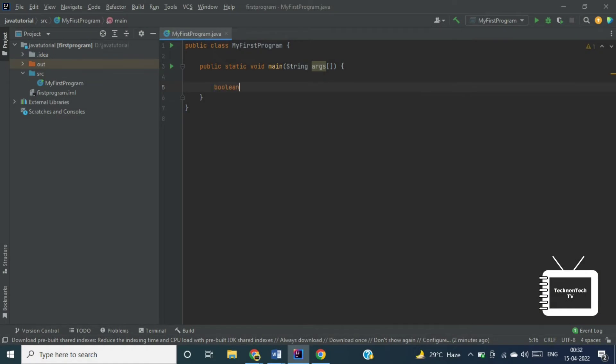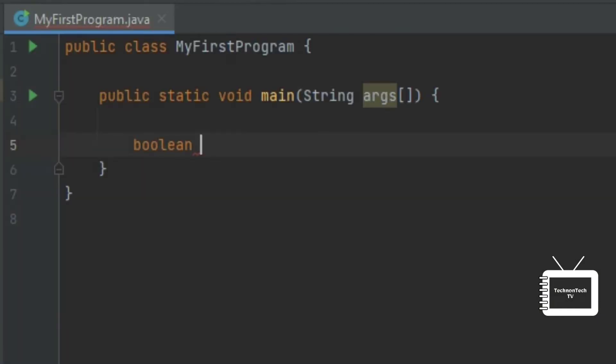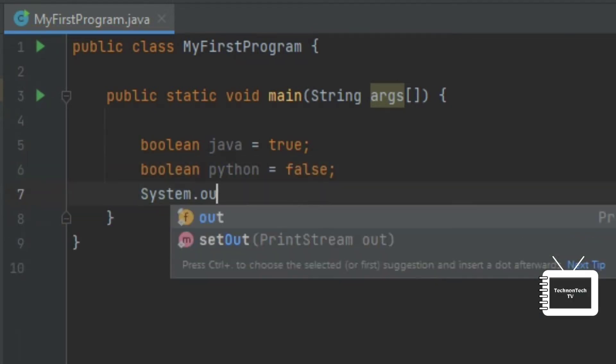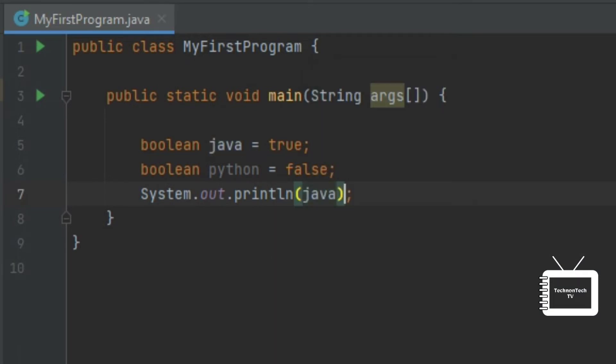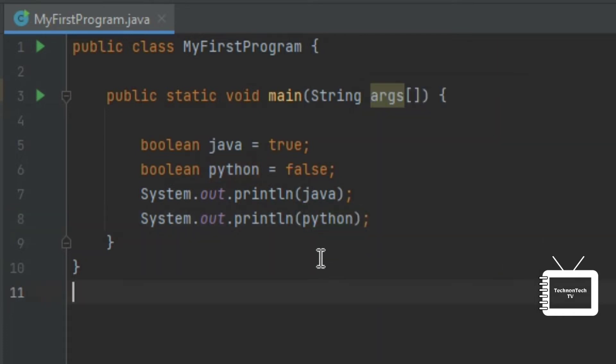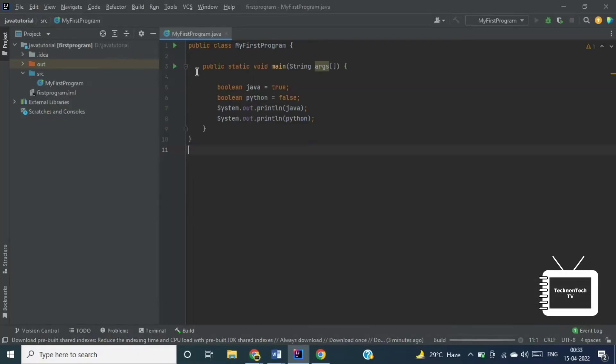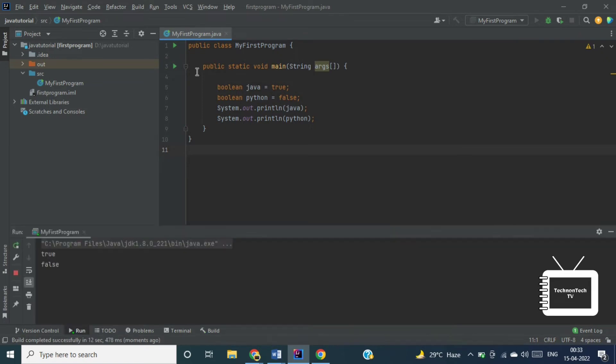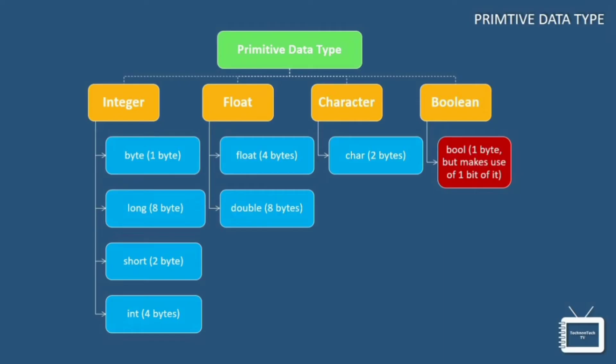Now let's write a small program and understand how it works. So for Java variable I am assigning true value and for Python I am assigning value as false. Now let's print both the variable values. So for this line output will be true and for this output will be false. Now let's run the program. So here you can see the output.